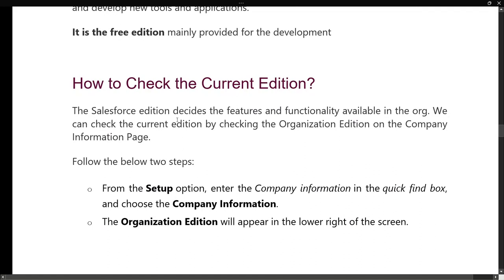How to check your current edition: if you already have an account and want to check what edition you're using, go to the Setup option, then type 'company information' in the quick find box.